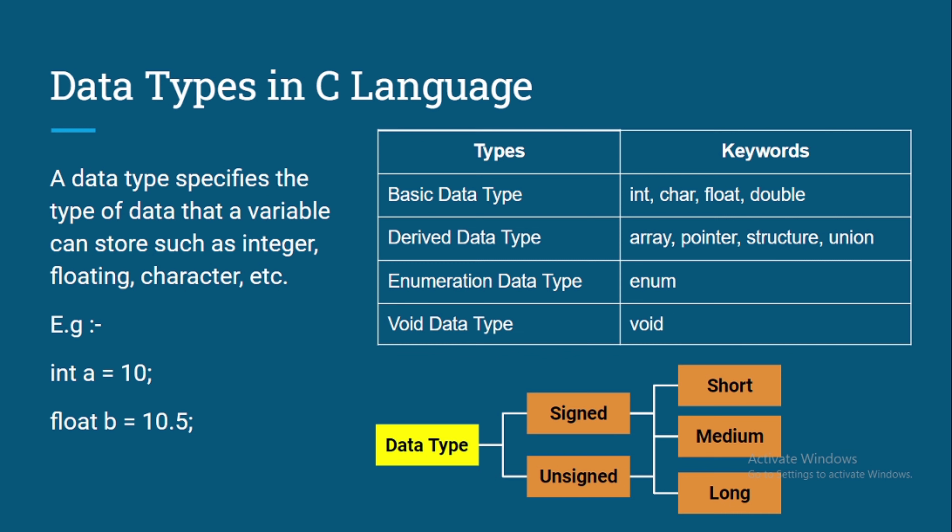Then we have derived data types — specific data types used for specific kinds of data. For example, array, where we can store multiple values in a single variable; pointer, where we can store memory addresses; and structure and union. These are special data types for specific purposes. We will create separate videos for array, pointer, structure, and union as they are very vast topics.